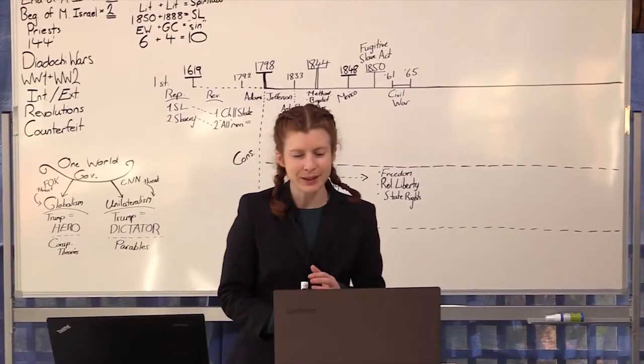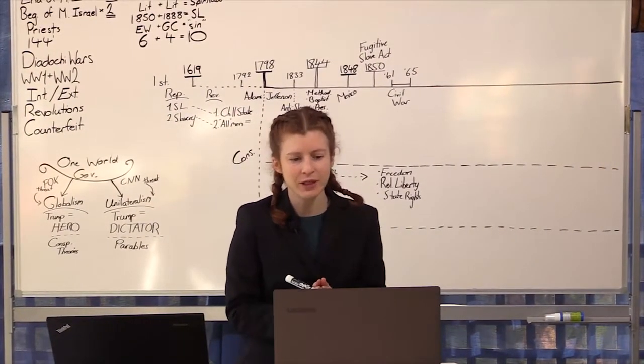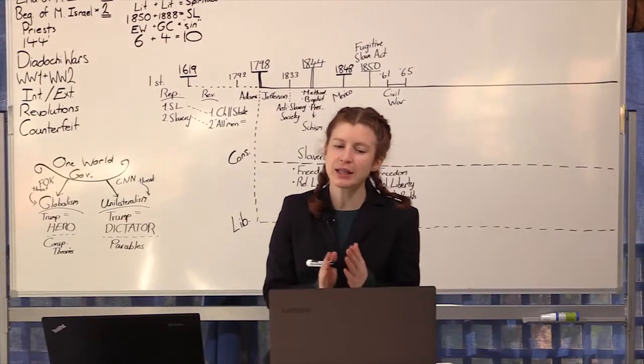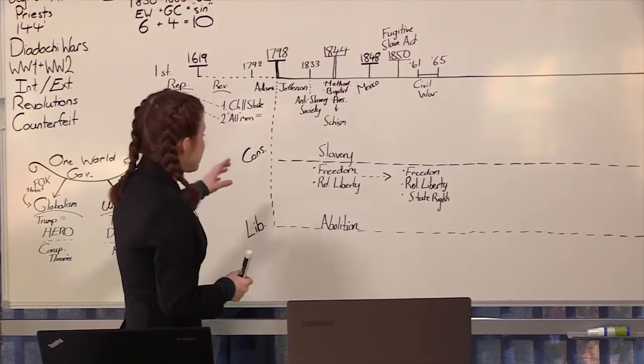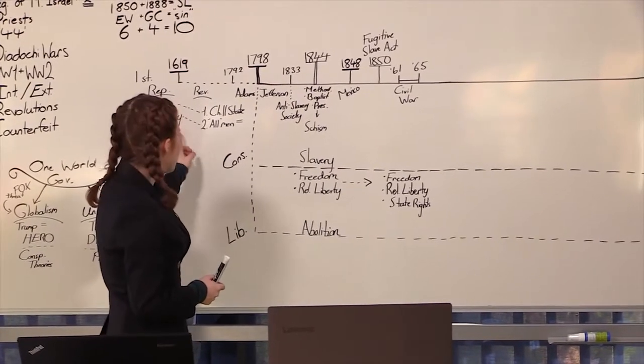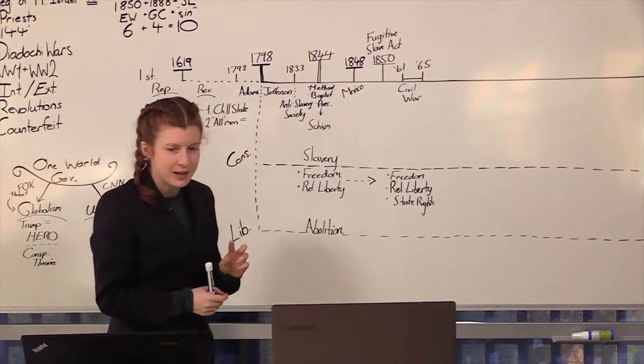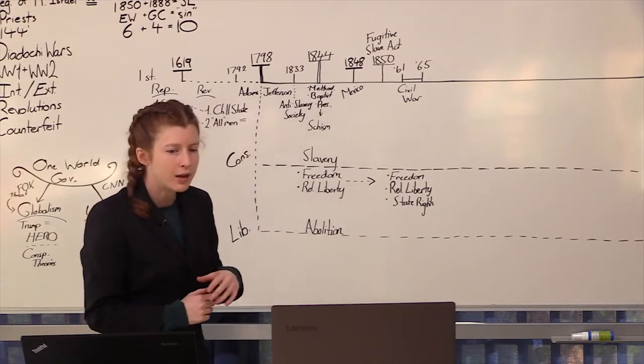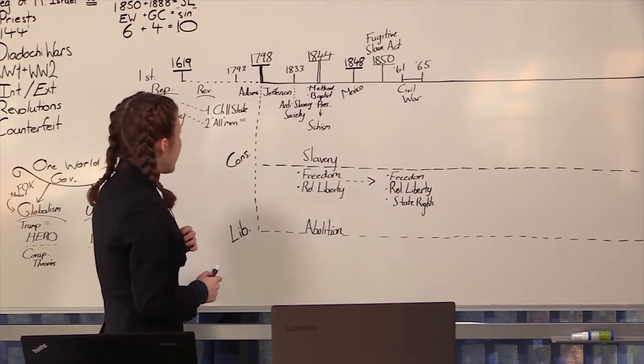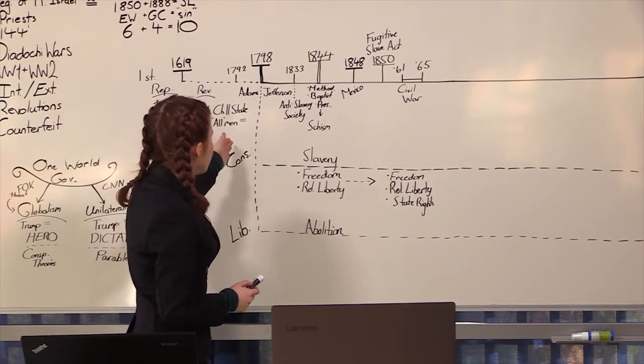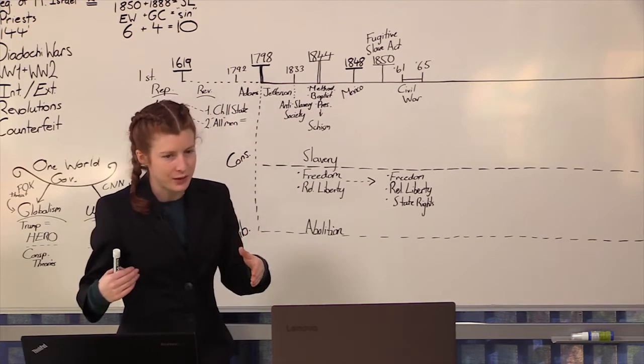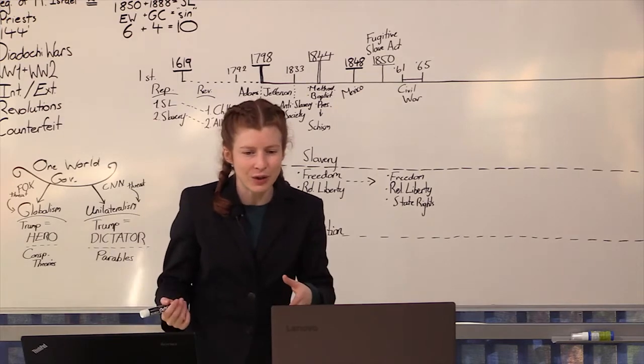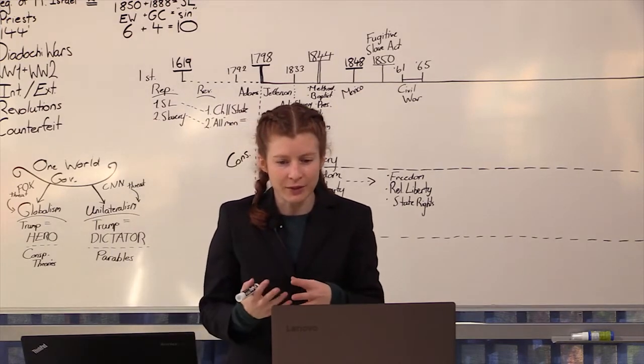We're continuing from where we left off, working progressively through the history of the United States. We mentioned 1619, the problems at the very beginning of government in the colonies, then progressing through to 1798, going through the history of the American Revolution, the writing of the Constitution, all of that.